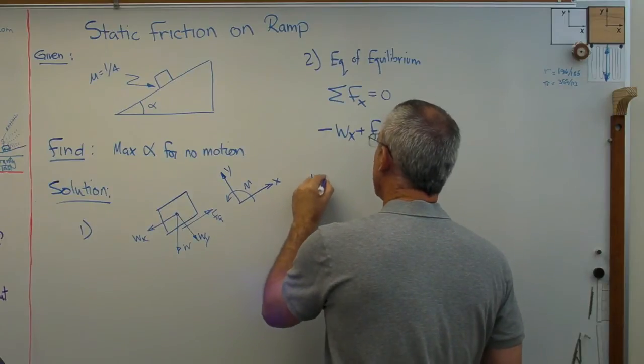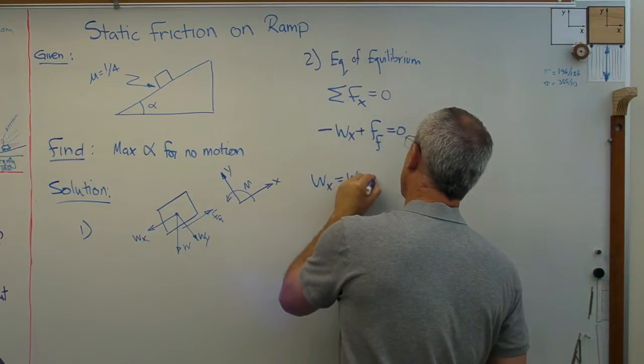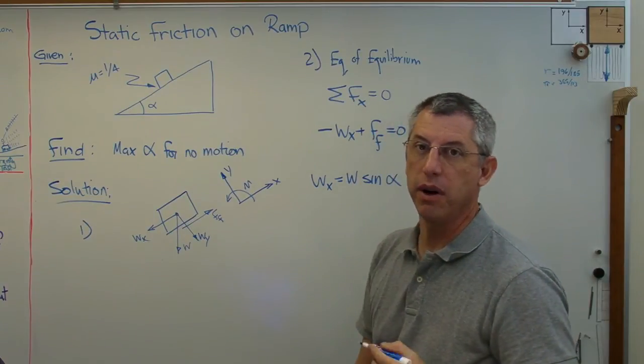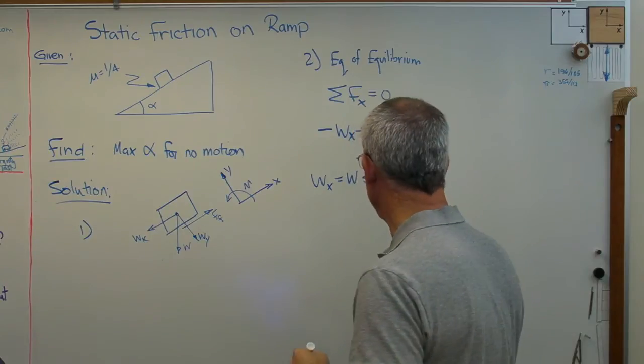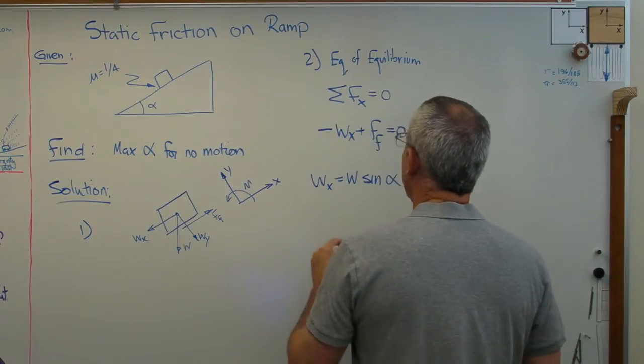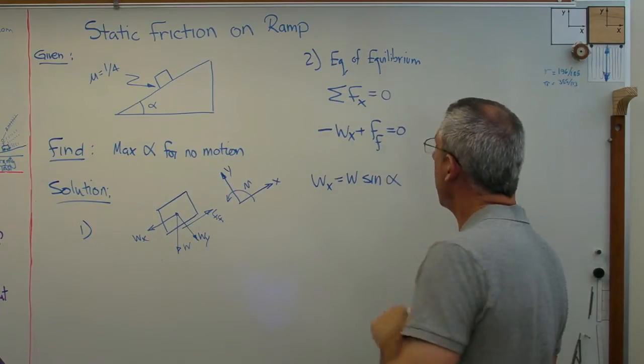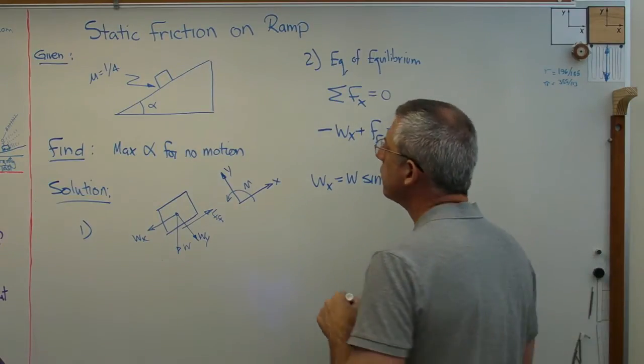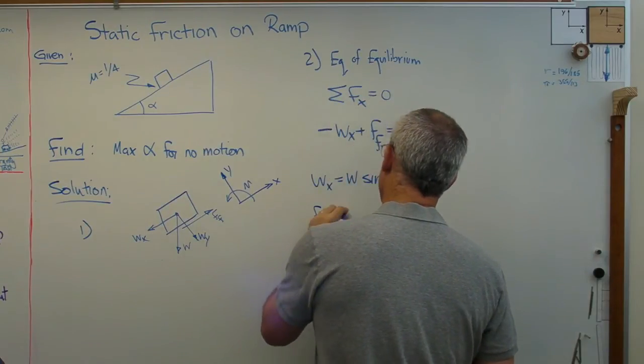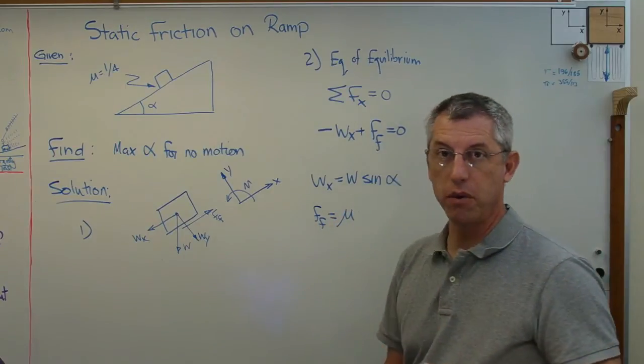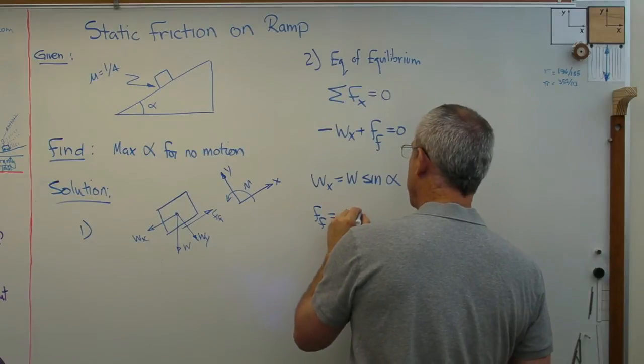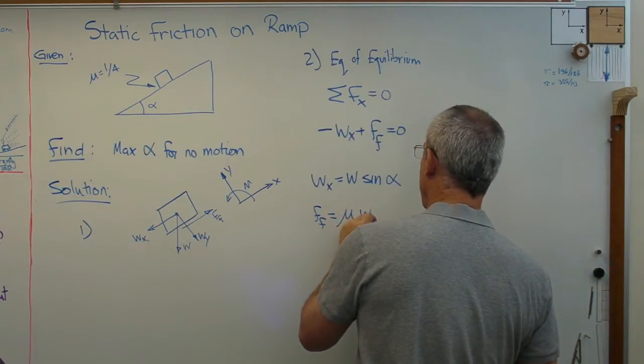Well, W_X is going to be W sine alpha. That ding you keep hearing is my cell phone going off. I keep getting texts while I'm doing this. And today I forgot to turn the sound off on the cell phone. Sorry. And anyway, W_X is W sine alpha. All right. And let's see. Friction force is mu times the normal force, normal force with respect to the ramp.